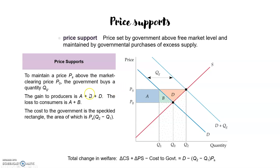Let's examine the resulting gains and losses for producers, consumers, and the government. At the price PS, which is the support price, consumers are going to demand only q1, as PS crosses the demand curve at q1. But the supply at this price will increase to q2. The producer would like to produce q2, but consumers will only demand q1. The government will buy this difference between q2 and q1 — this quantity is called qg.